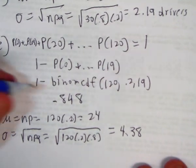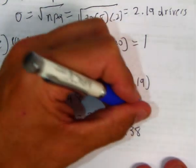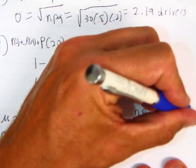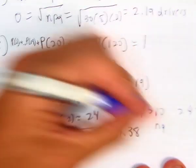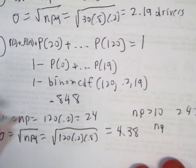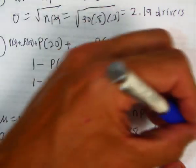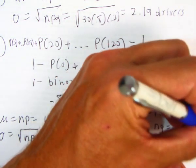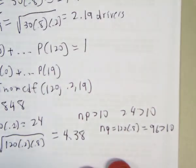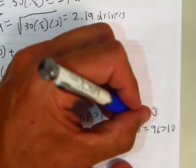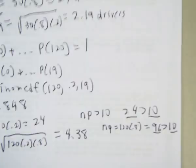NP has to be at least 10, and it is, so 24 is greater than 10. And NQ, which would be 120 times 0.8, and that's 96, and that's greater than 10 as well. Both of these checked out. So we got 24 is greater than 10, 96 is greater than 10, so we can use a normal model.